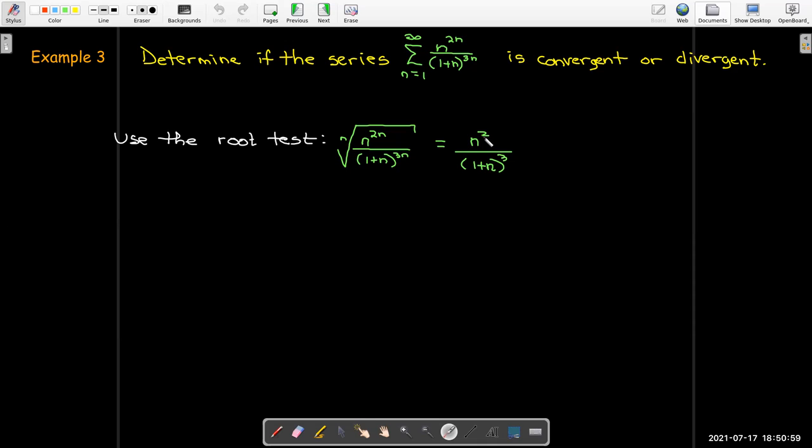So now I've got a quadratic over a cubic polynomial. And I know that as n goes to infinity, that will go to zero. So again, this series is convergent by the root test.